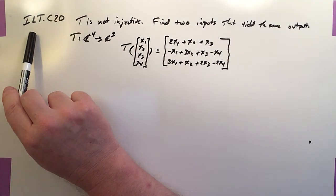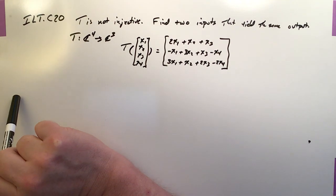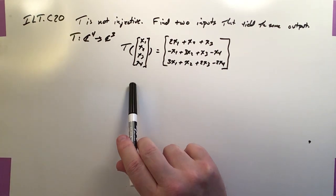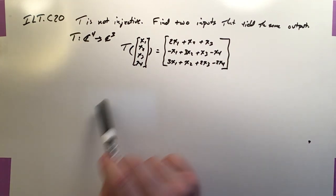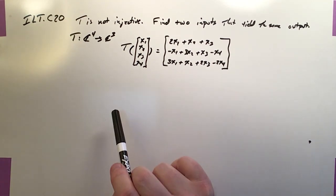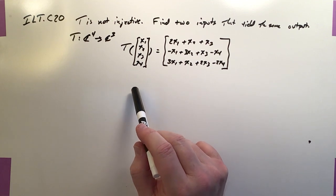This is ILT injective linear transformation C20, and our first one actually is non-injective transformation. Injective means it's got a one-to-one ratio, which means every output has a unique input. It's called a one-to-one.